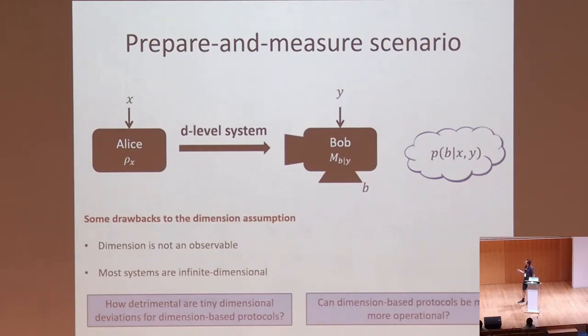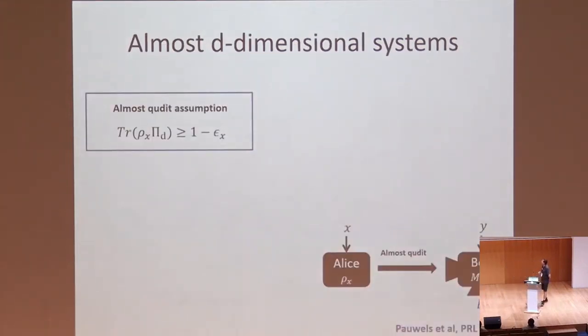But we can use these infinite dimensional systems to accurately approximate a qubit, and then we simply call it a qubit because it's handy. So then this leads us to our question. Firstly, how detrimental are these tiny dimensional deviations that the real physical systems will give you? Another question is, can these dimension-based protocols be made more operational?